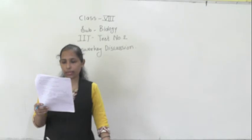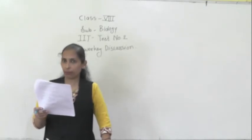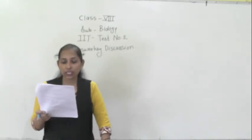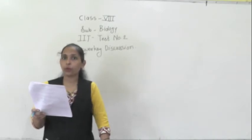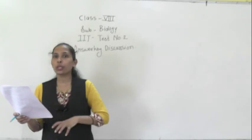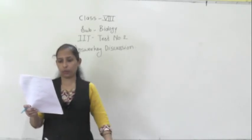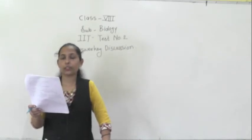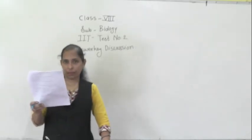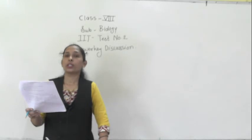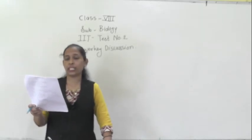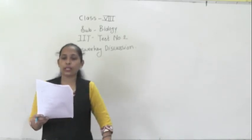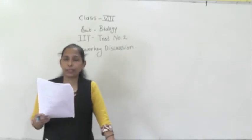Question number fifteen: the barrier between the protoplasm and the outer environment in an animal cell. In an animal cell there is no cell wall. The cytoplasm and nucleus together are called protoplasm. The barrier between the protoplasm and the outer environment is option A, the plasma membrane, which prevents protoplasm from coming out.